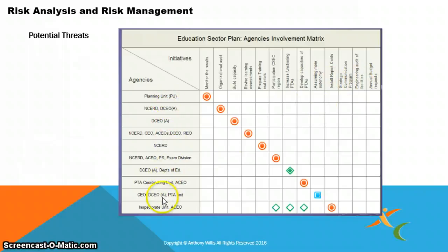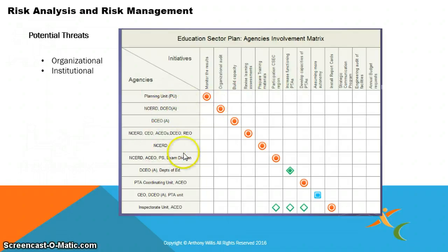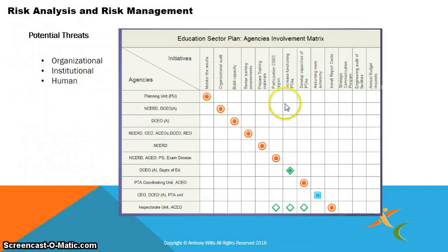On the left-hand column it lists the agencies that are involved, and on the top right here are the initiatives — taken from the Guyana sector plan. So once again, you apply the different categories: organizational — what are the organizational threats the program faces in terms of agencies, DCO, and so on? What are the human threats? Migration, strikes — what are they?